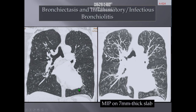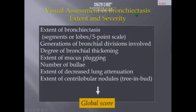Systematically, when you have coronal views, thicken the slab and apply maximum intensity projection to increase your detection ability in displaying various foci of infectious bronchiolitis. At the end of interpretation, the radiologist is asked to incorporate in the report all information permitting assessment of the extent and severity of both bronchiectasis and small airway disease.